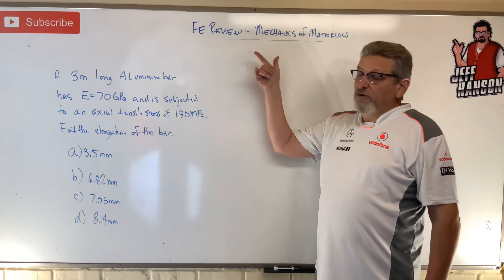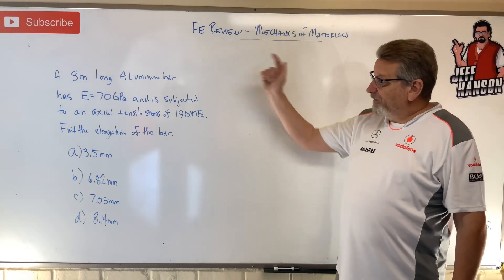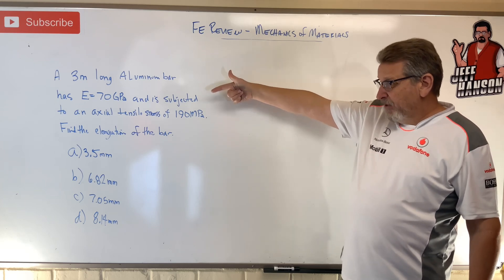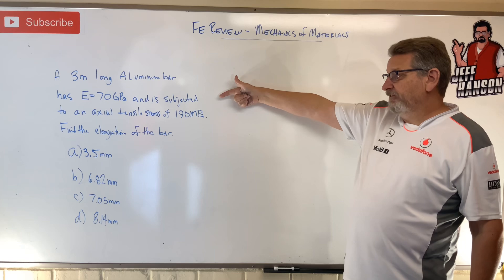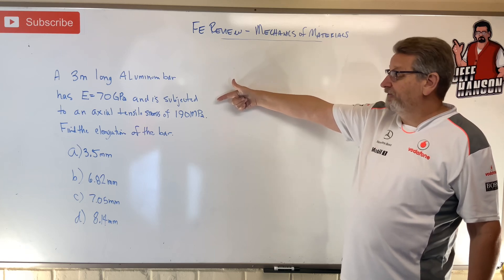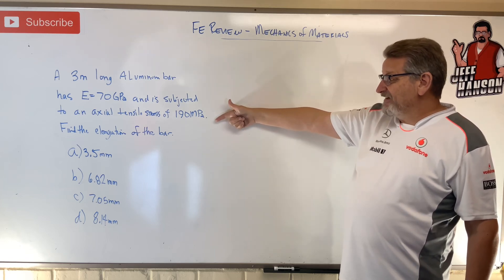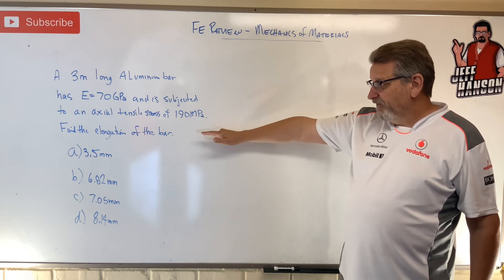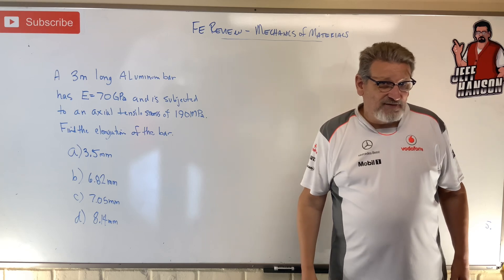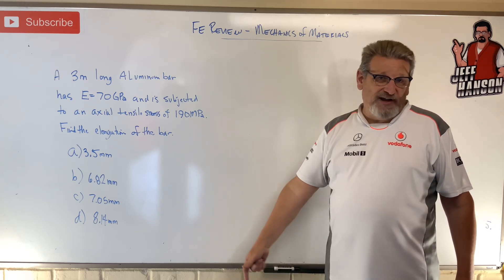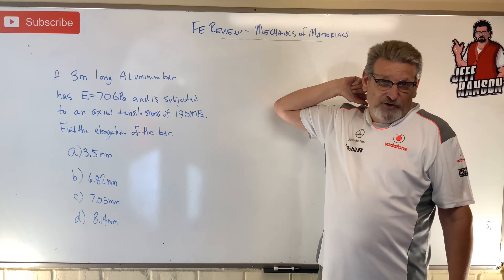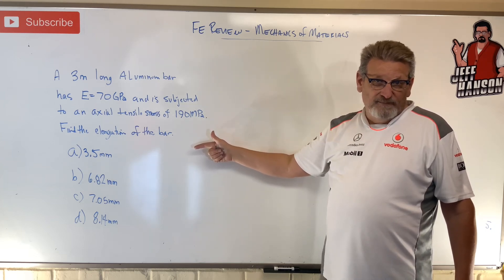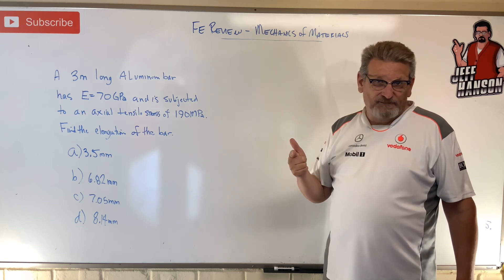Hey friends, welcome back to the review problem — mechanics of materials. Here we go. A three-meter-long aluminum bar has a modulus of elasticity of 70 gigapascals and is subjected to an axial tensile stress of 190 megapascals. Find the elongation of the bar. Press pause, work it out, and when you come back I'm going to show you how to do it.